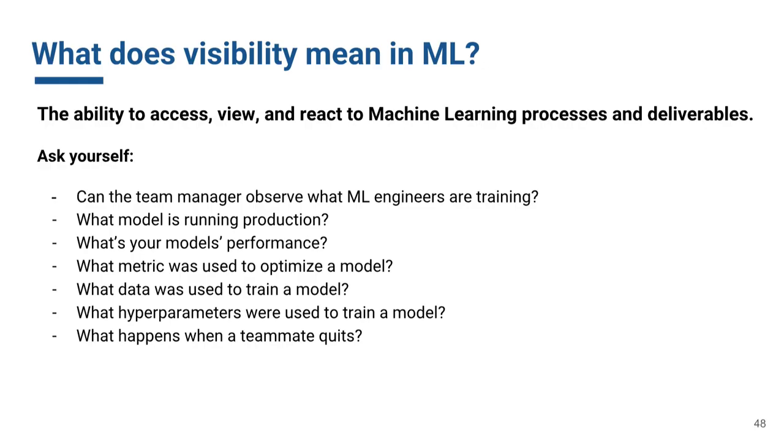What does visibility mean in machine learning? Here are some questions you might ask yourself. Can the team manager observe what the engineers are training? Do they have a good bird's eye view of what's going on? What model is actually running production? What metric was used to optimize the model? What data was used specifically? Is that data still relevant? What hyperparameters were used to train the model? And here's one you don't often think about: What happens when a team member quits? How do you pick up from where they left off? Huge problem.